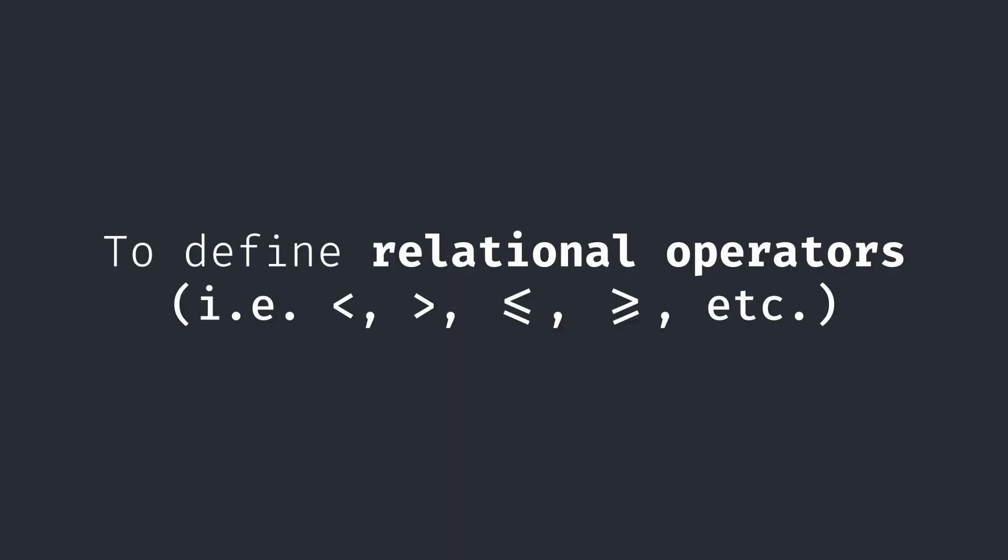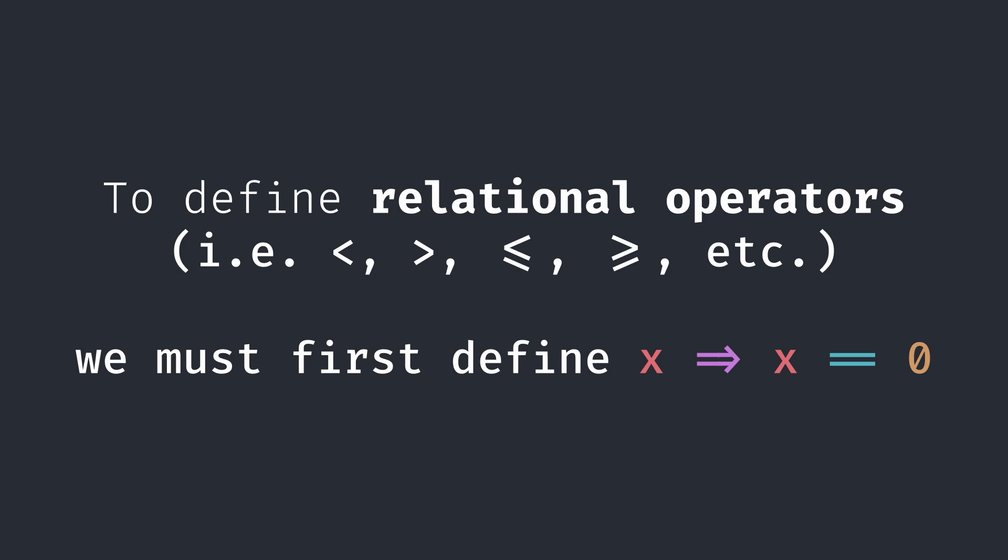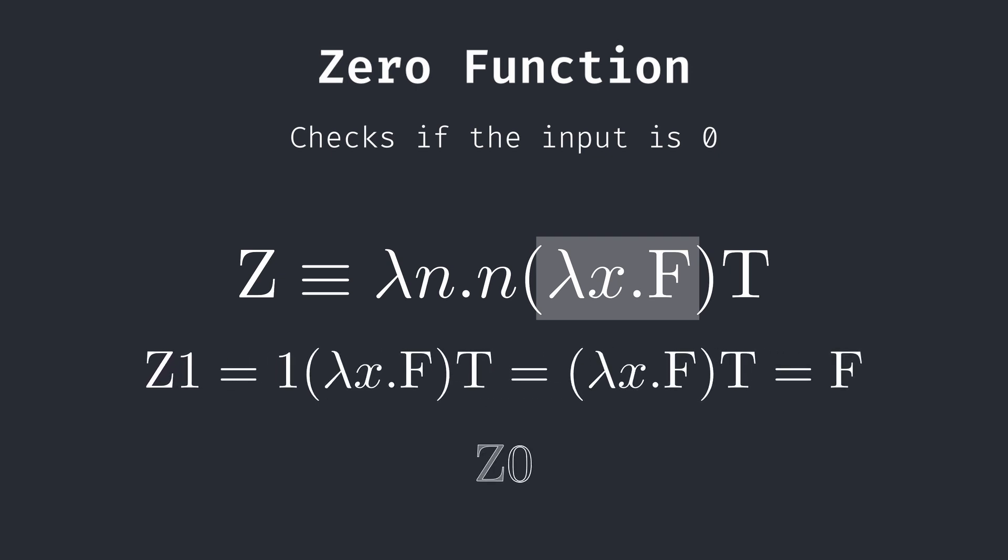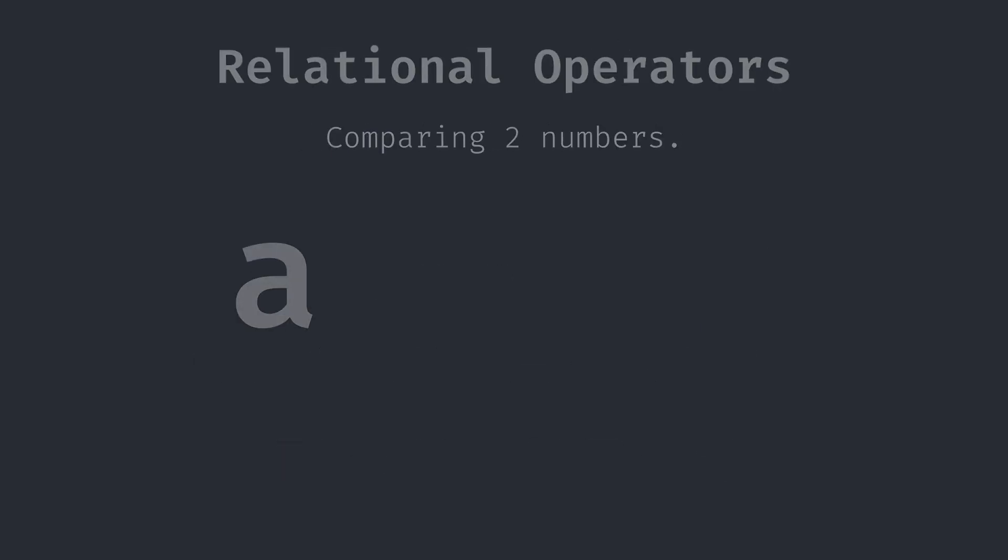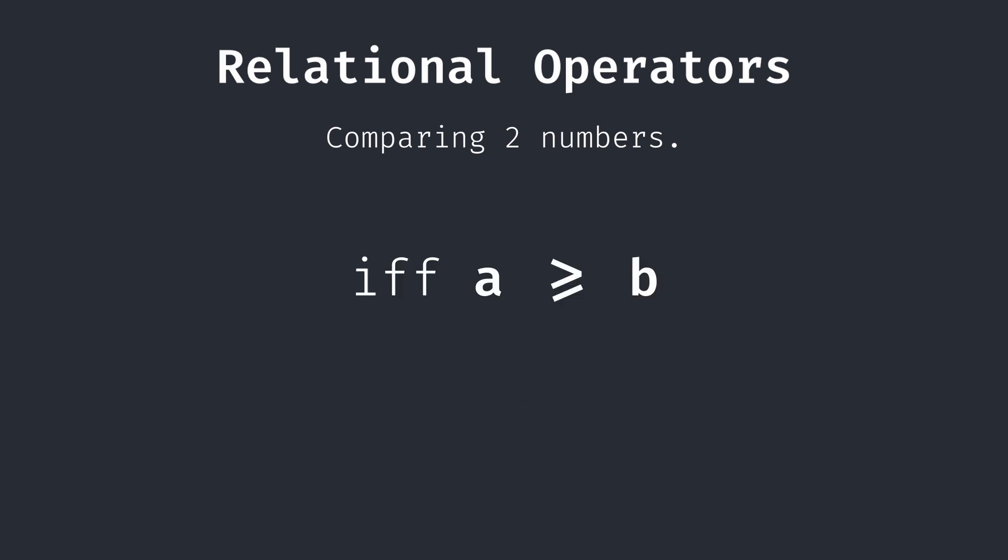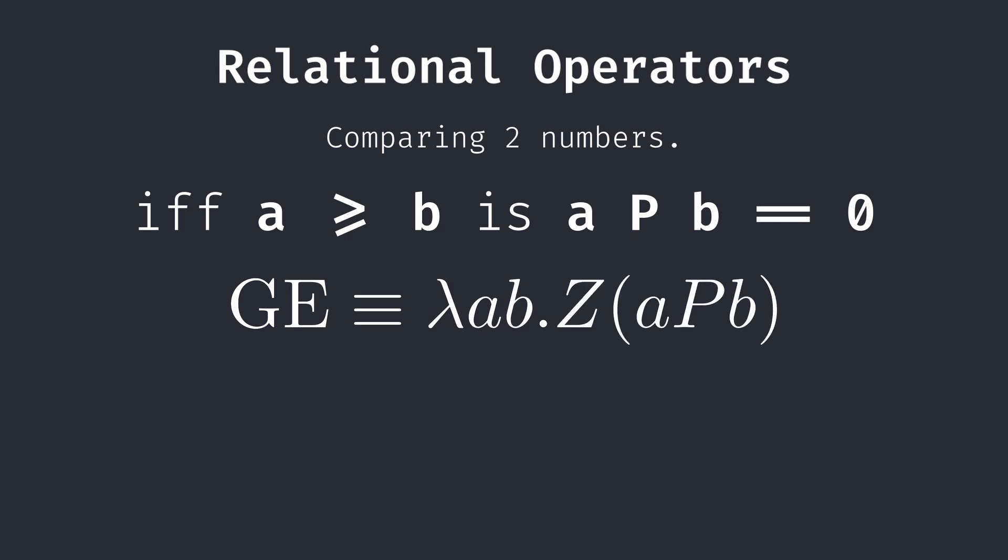To define relational operators, we must first start with a function that checks whether or not a number is 0. This will become useful later on. This function can be defined as such. Notice that the constant false function in the middle always returns false. When any non-zero numeral n is substituted, the false function is applied n times on true, still returning false. However, if and only if 0 is substituted, the false function is called 0 times on true, so true returns. Now let's define some relational operators. Consider two numbers a and b. When a is equal to b, running predecessor a times on b yields 0. However, when a is greater than b, it will also give 0, as the predecessor of 0 is still 0. Thus, if and only if a is greater than or equal to b is the expression a predecessor b equal to 0.